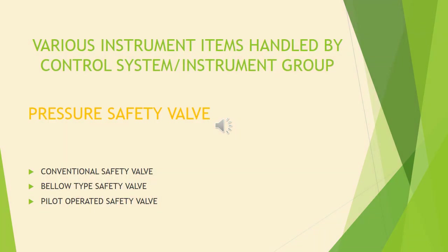A pressure relief valve is a safety device designed to protect a pressurized vessel or system during an overpressure event — any condition that causes pressure to exceed the specified design pressure or maximum allowable working pressure. The primary purpose is protection of life and property by venting fluid from an overpressurized vessel. Three types of safety valves used in industries are: conventional safety valve, bellows-type safety valve, and pilot-operated safety valve. Selection depends on back pressure and set point.